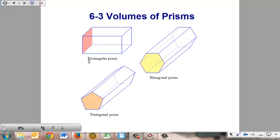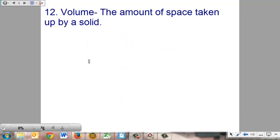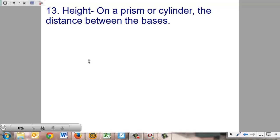6-3 Volumes of Prisms. The volume is defined as the amount of space taken up by a solid. The height on a prism or cylinder is the distance between its bases.